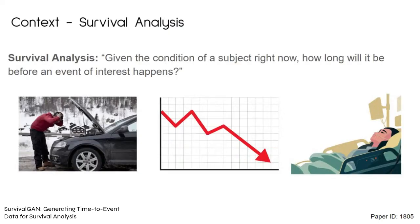The context we're looking at is survival analysis, where we ask the question: given the condition of a subject right now, how long will it be before an event of interest happens? For example, given a car's current condition, how long before mechanical failure? Or given a company's current condition, how long before bankruptcy? Or given a patient's current condition, how long before we might expect a death?